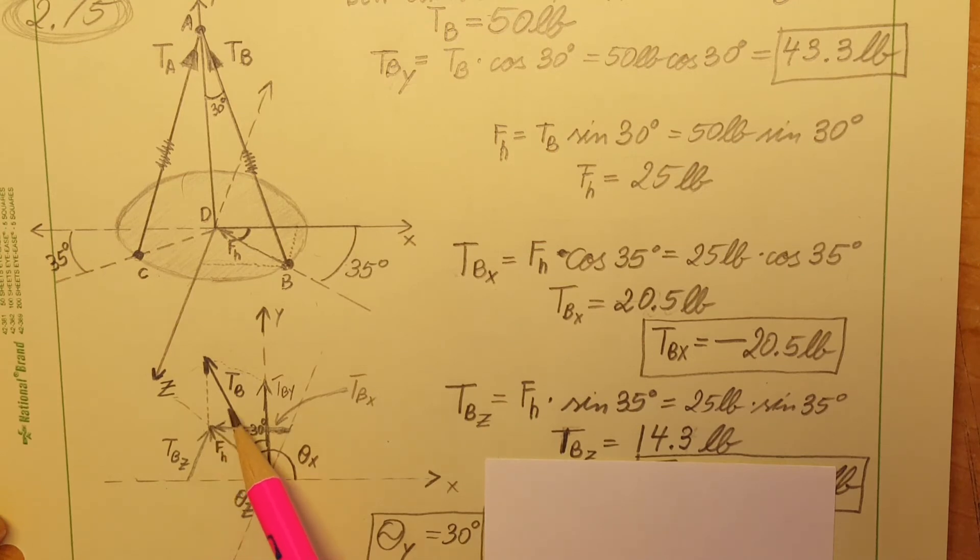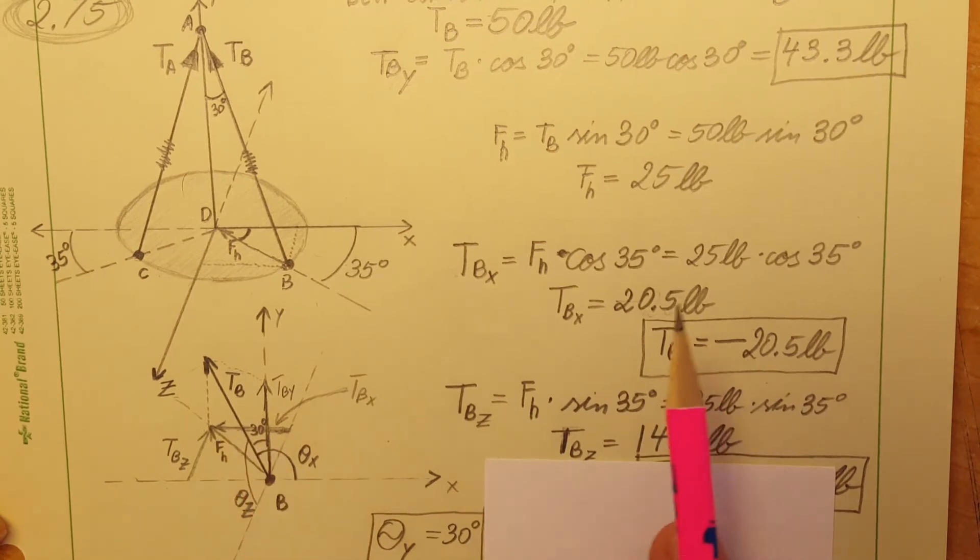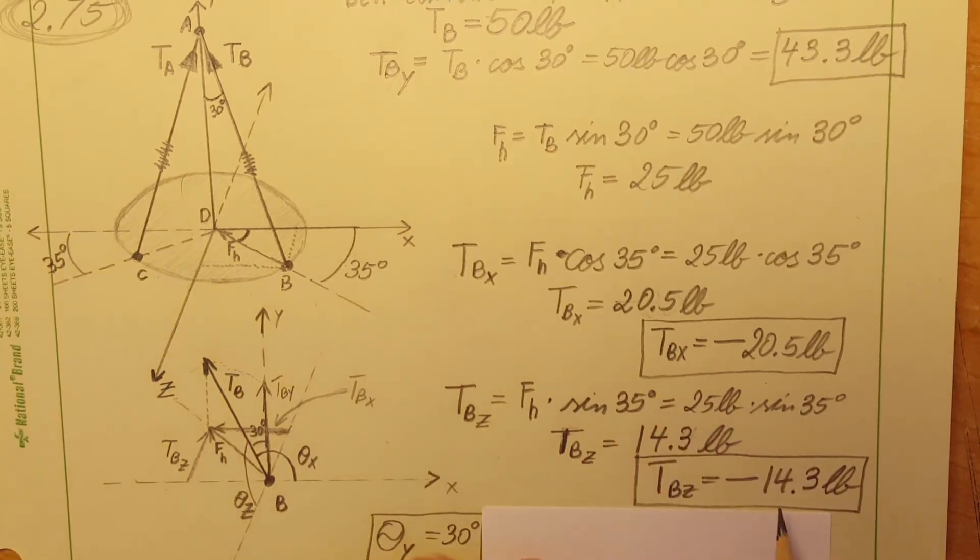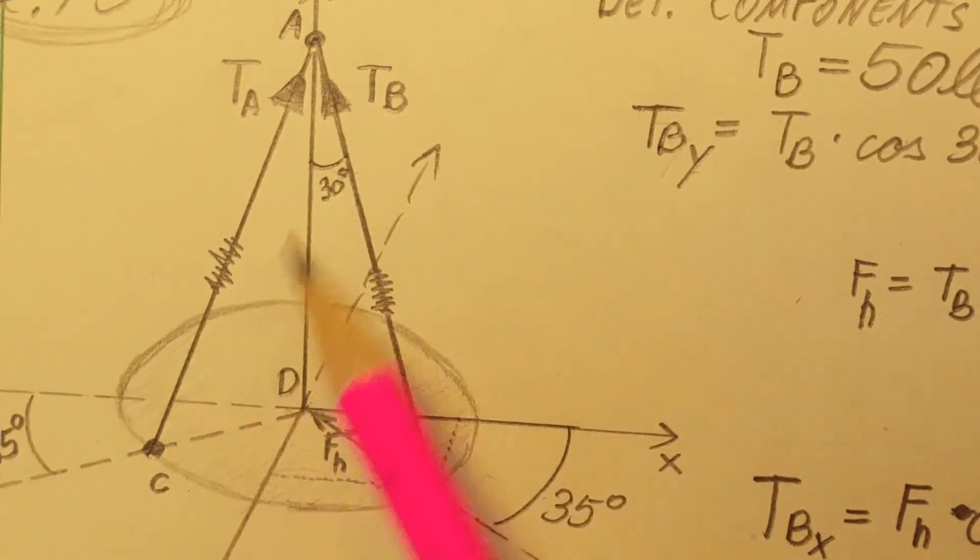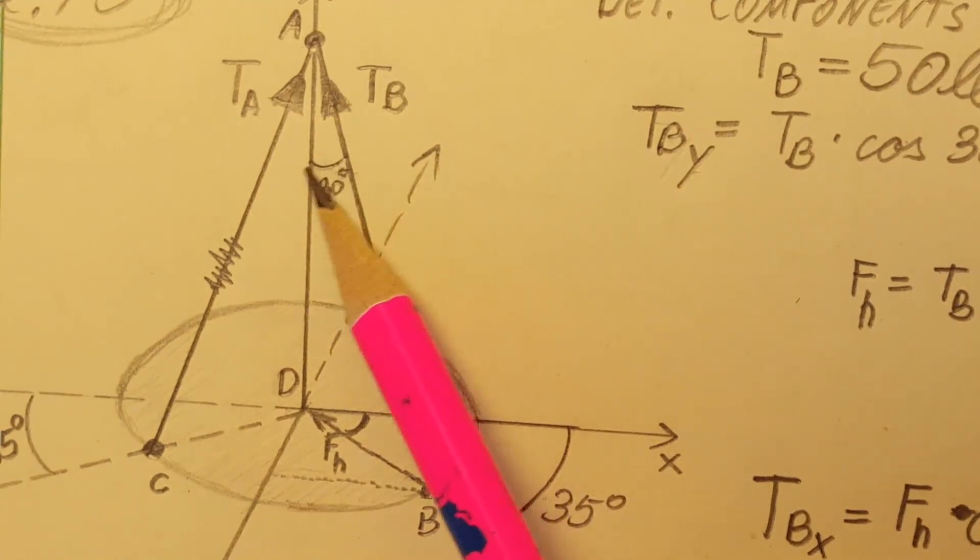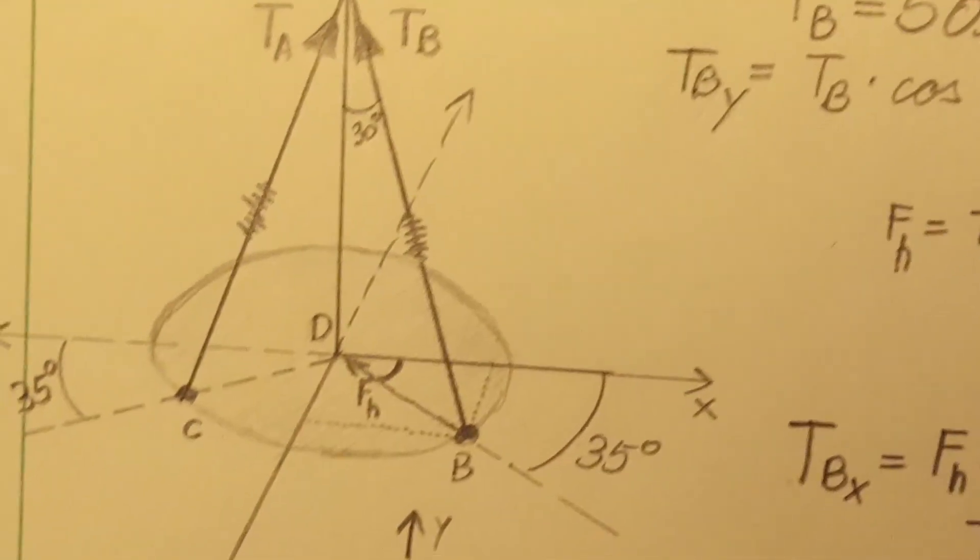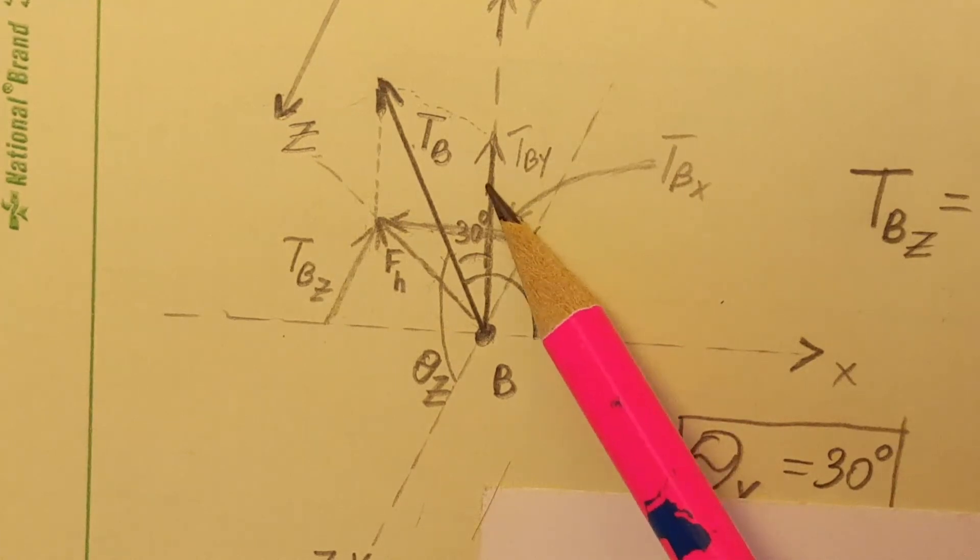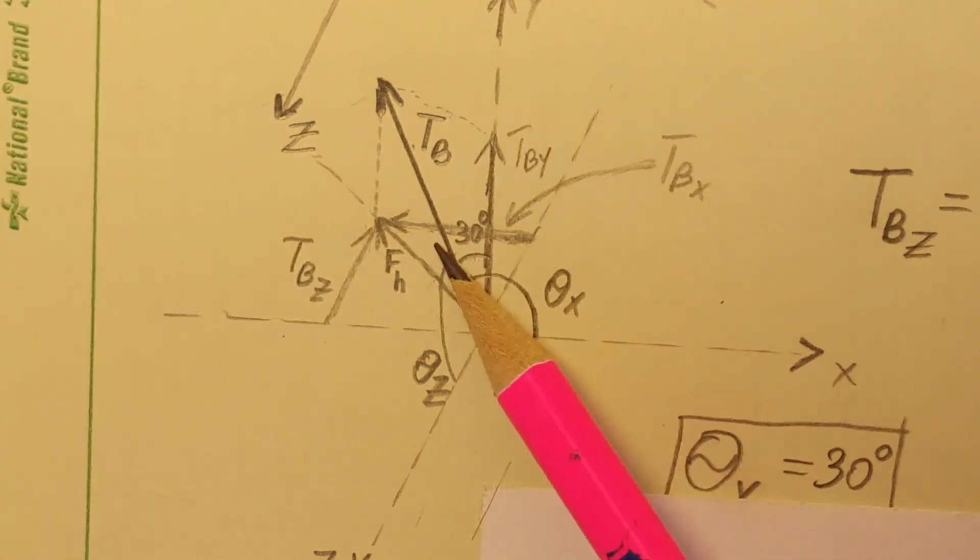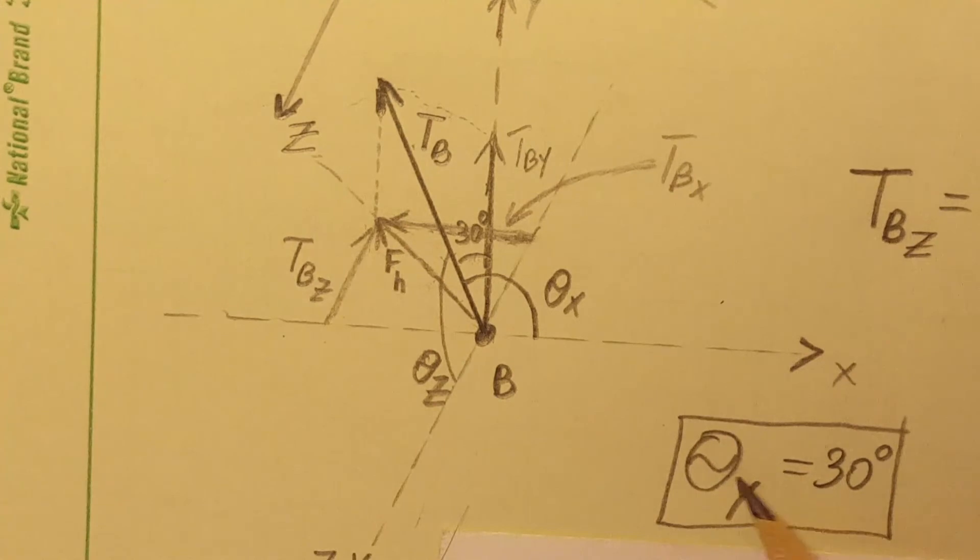Now for the angles, for theta_y we were given it's 30, so when we redrew it we had this 30. From our TB to the y-axis we have 30 degrees, so this is our theta_y 30. There's no calculation needed.